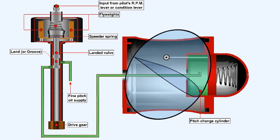An input from the pilot's RPM lever, or propeller condition lever, will adjust the setting of the speeder spring, selecting the RPM, which the CSU then automatically maintains. In order that it can respond to the various demands made by the pilot, regarding the propeller RPM, the constant speed unit controls the oil flow to the pitch change cylinder in three ways.